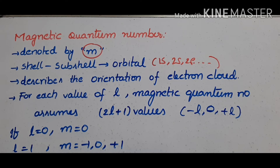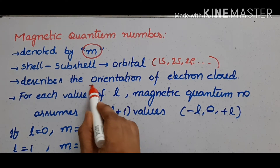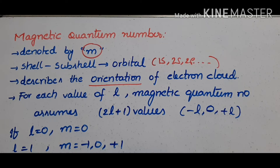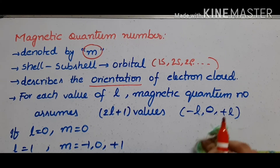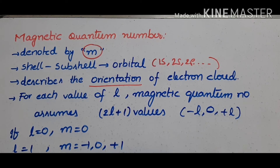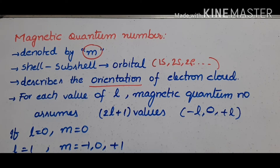It describes the orientation of the electron cloud. The electron cloud can be oriented in different directions — along the x, y, and z axes. So the orientation of the electron cloud is described by the magnetic quantum number.